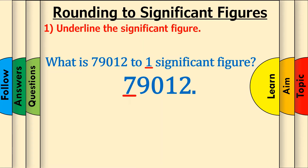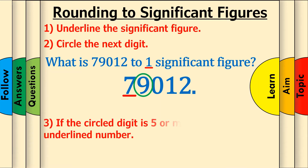Step 2: Circle the next digit, which is 9. Step 3: If the circled digit is 5 or more, add 1 to the underlined number. 9 is 5 or more, so add 1 more to 7, which gives 8.